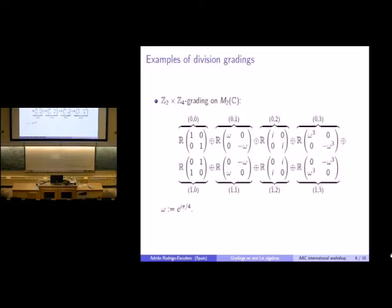The last example is a division grading on the two by two matrices over the complex field, which has degree eight. I won't go into the details of the grading, but what is interesting is that in this case we have a Z_4 factor in the grading group.